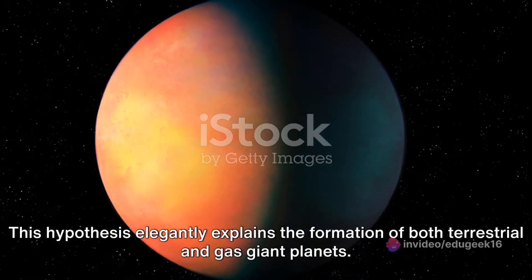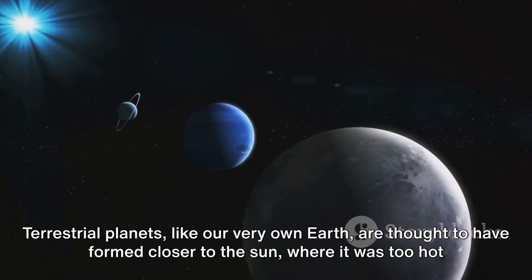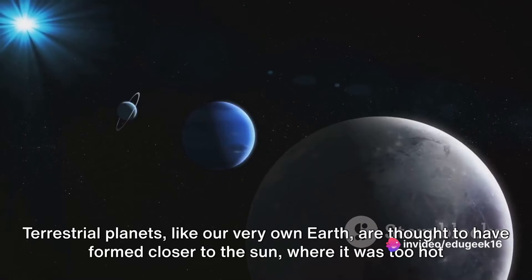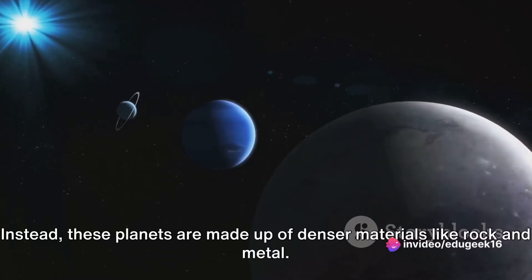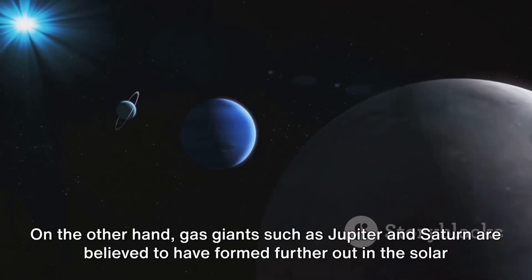This hypothesis elegantly explains the formation of both terrestrial and gas giant planets. Terrestrial planets like our very own Earth are thought to have formed closer to the Sun, where it was too hot for gases like hydrogen and helium to condense. Instead, these planets are made up of denser materials like rock and metal.